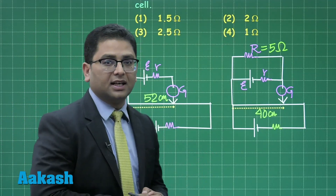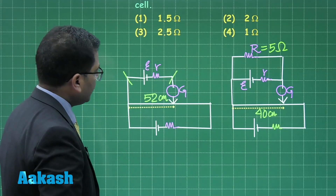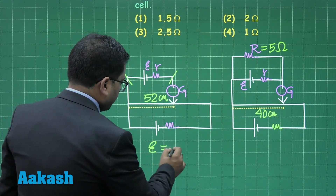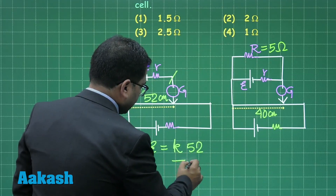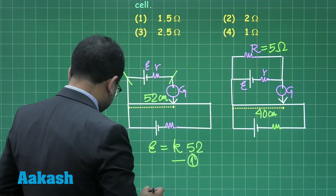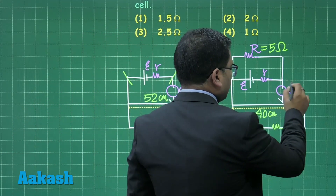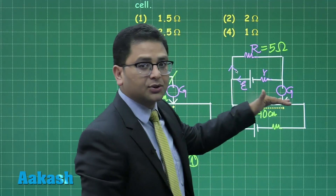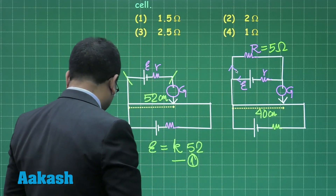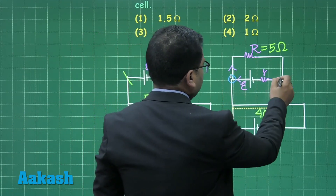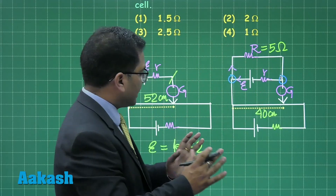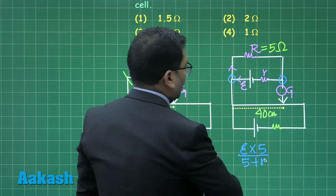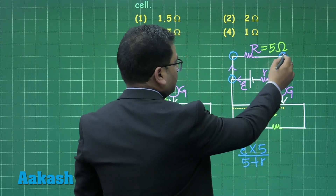At the null point, the potential difference across the tapped length equals the EMF e (no current in the galvanometer branch). So for case 1: e = k × 52 — equation 1. In case 2, current flows through the cell and shunt, so the terminal voltage is e × 5 / (5 + r). This terminal voltage equals k × 40 — equation 2.